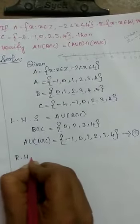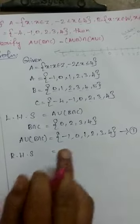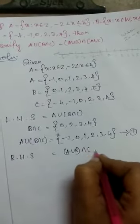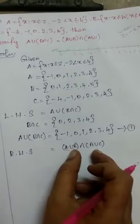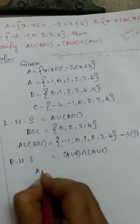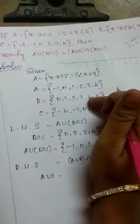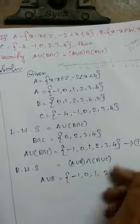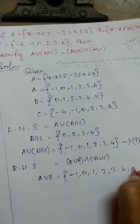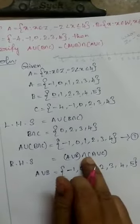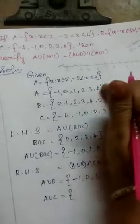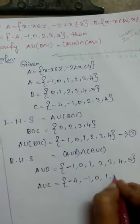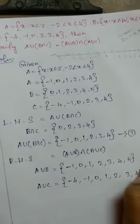Next, find RHS. RHS is A union B intersection A union C. First complete the bracket: find A union B. A union B gives the result: -1, 0, 1, 2, 3, 4. Now find the second value for A union C.